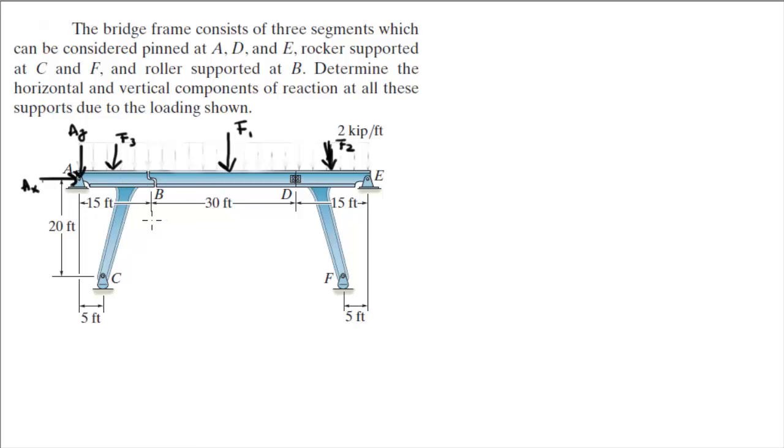Remember, when we were working with the member BD, the reaction of B was going up. So, in this member, the reaction is going down. That is BY, which we already have at 30 kip if I remember correctly. Yeah, 30 kip. 30 kip. We found that when we were calculating the forces on the first member. And CY is right here.